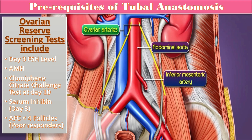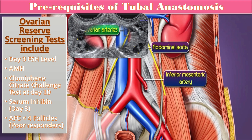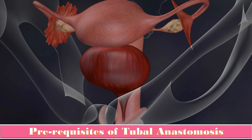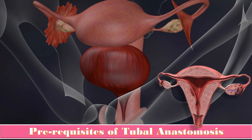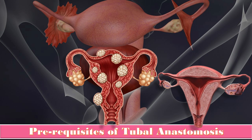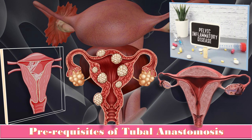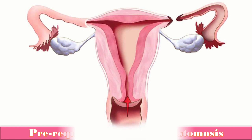Another important thing is that we have to perform an ultrasound for ovarian size and any pathology like cysts and tumors. Among the prerequisites, we also need to know about the uterus and its associated pathologies such as adenomyosis, fibroid uterus, pelvic inflammatory disease, or Asherman syndrome.